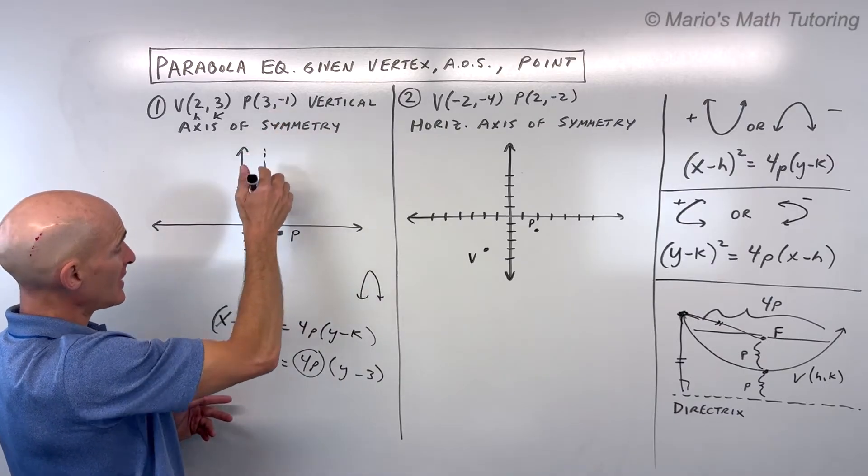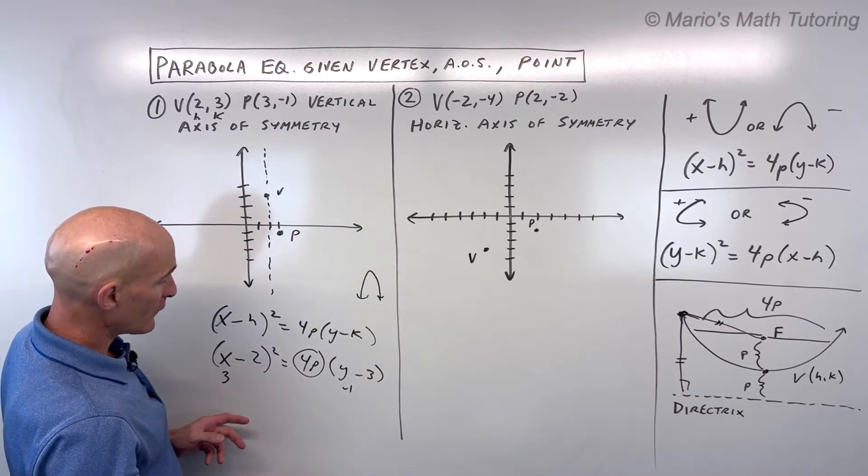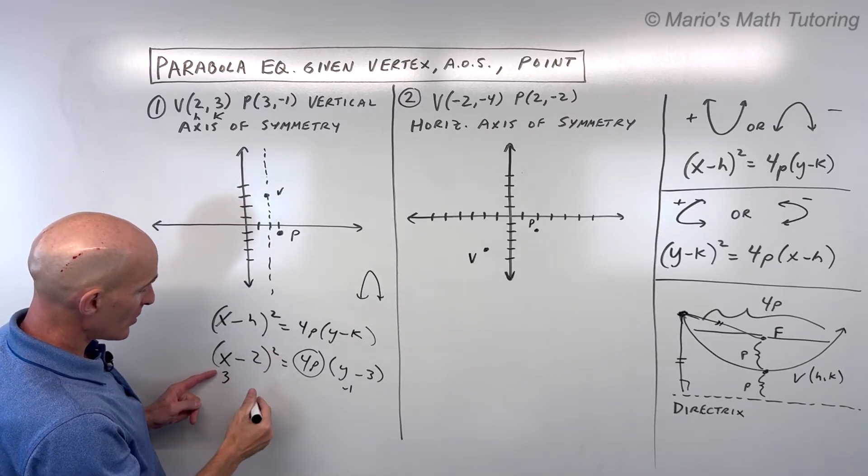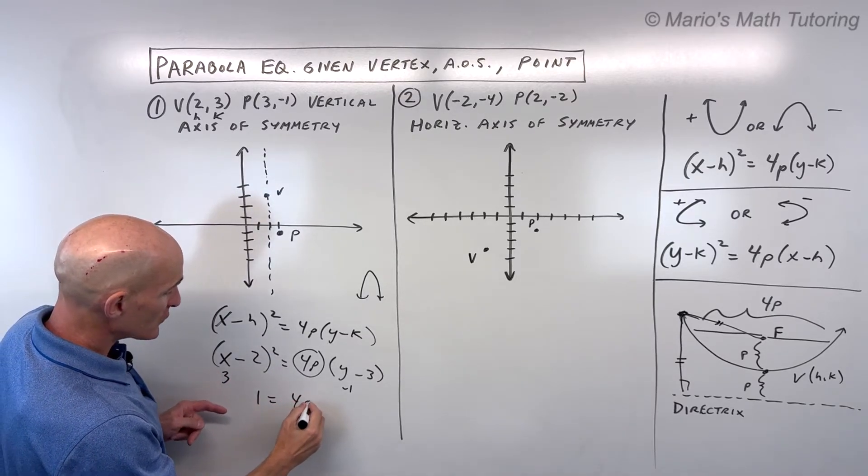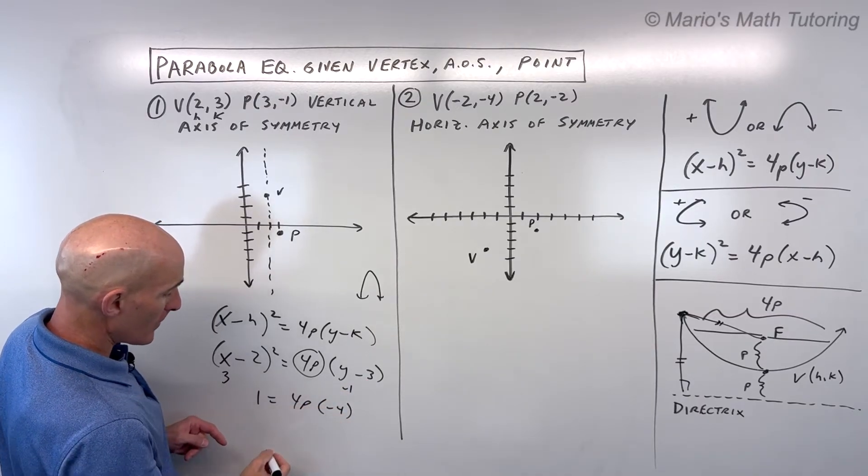So this point, (3,-1), let's plug in 3 for x, negative 1 in for y. So 3 minus 2 is 1, 1 squared is 1, equals 4P, negative 1 minus 3 is negative 4.